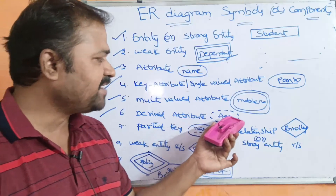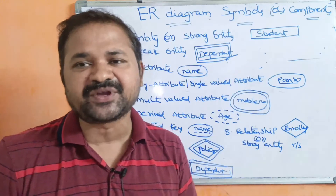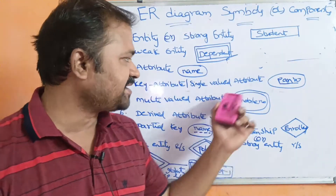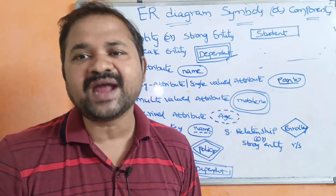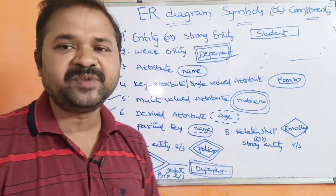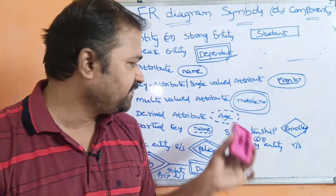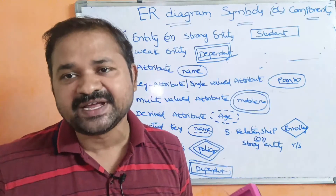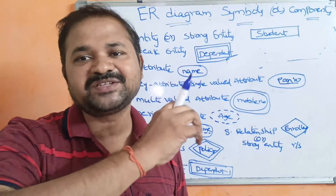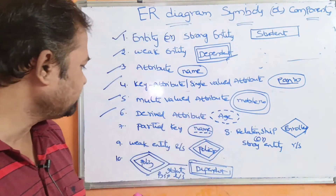Next is the derived attribute. Derived attribute means we use a dashed ellipse. We have two types of attributes: stored attribute and derived attribute. A stored attribute's value is stored in the table, whereas a derived attribute is not stored in the table — it is simply derived from other attributes. For example, age is not stored in the table; only date of birth is stored. Age is derived from the date of birth. So age is represented using the dashed ellipse symbol.